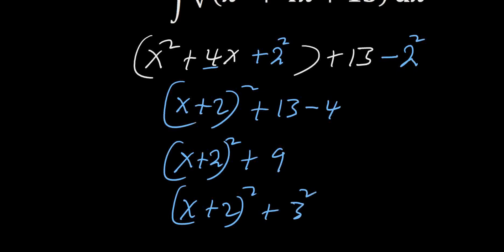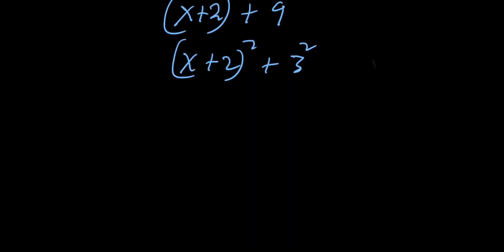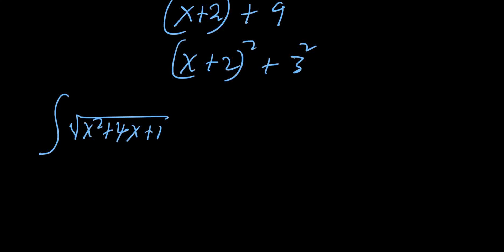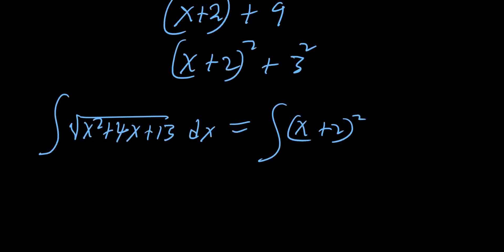So this means the integral of root(x squared plus 4x plus 13) dx is equal to the integral of root((x+2) squared plus 3 squared) dx.